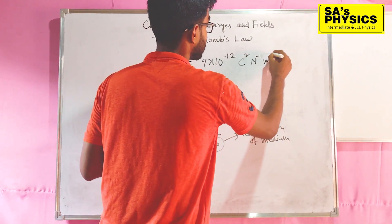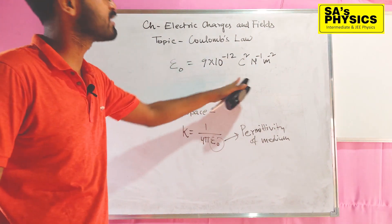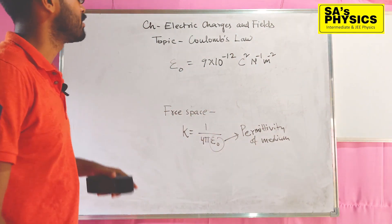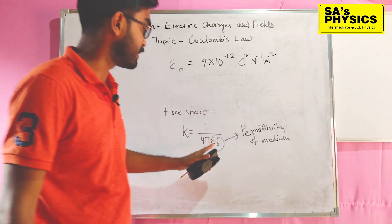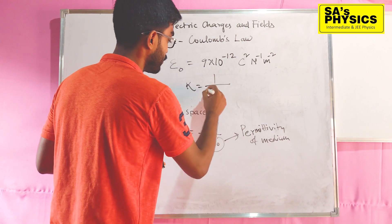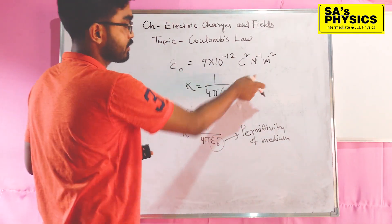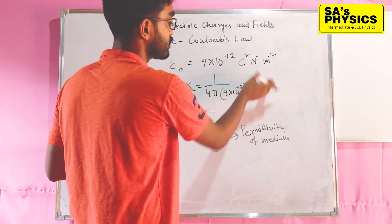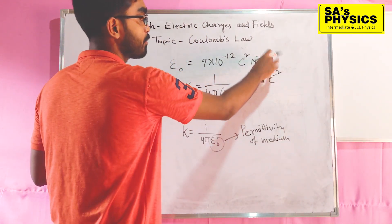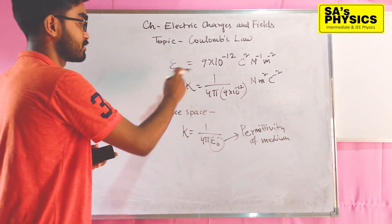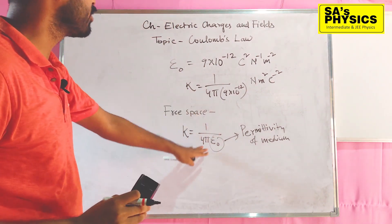The unit of permittivity of free space is coulomb squared per newton per meter squared. Coulomb is nothing but the SI unit of charge. So coulomb squared per newton per meter squared is my permittivity of free space. If we write the K value: K = 1 by 4 pi epsilon naught. Since 4 pi has no unit, the unit of K becomes newton meter squared per coulomb squared. So this is the electrostatic force constant and permittivity.